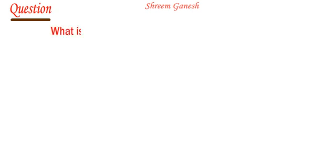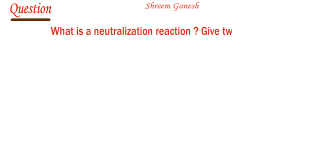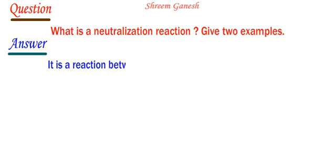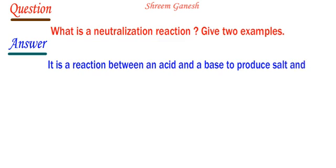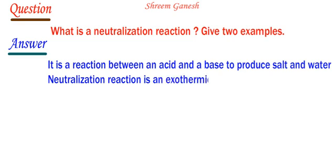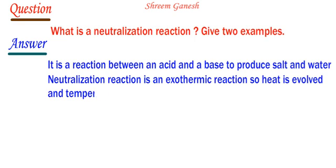What is a neutralization reaction? Give two examples. It is a reaction between an acid and a base to produce salt and water. Neutralization reaction is an exothermic reaction, so heat is evolved and temperature increases.